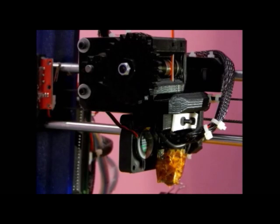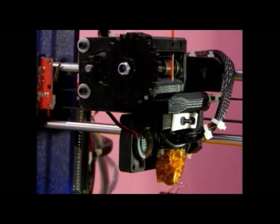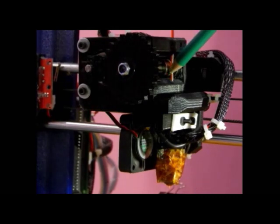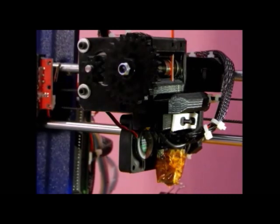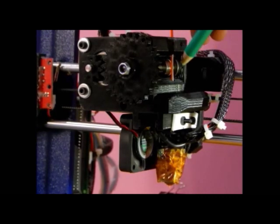The flow rate, that is amount of plastic fed into the nozzle, is controlled using this Nema 17 motor through this gear and at the end, this hob bolt. This bolt, that is hob bolt, pushes the filament into the nozzle.